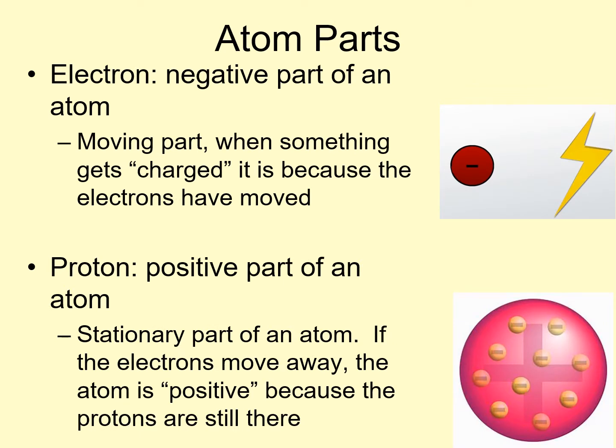So an atom has parts. Two of those parts are the electron, which is the negative part of an atom. It's the moving part. And when something gets charged, it's because the electrons have moved.